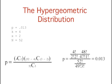Capital N, the size of the population, is 52 because there are 52 cards in a deck. Lowercase n, the number sampled, is 2 because two cards are sampled without replacement.